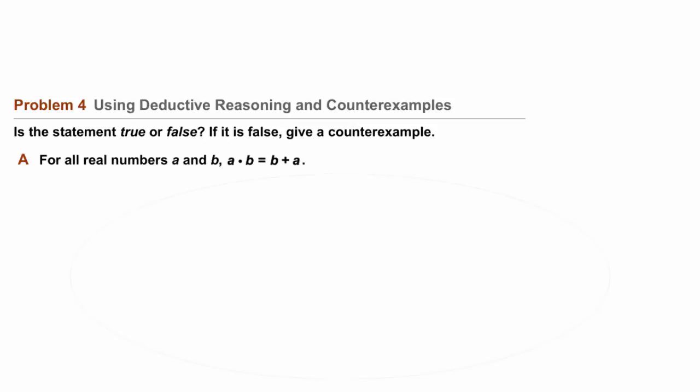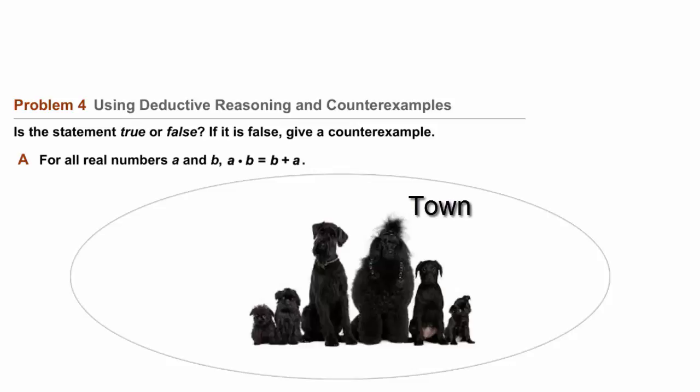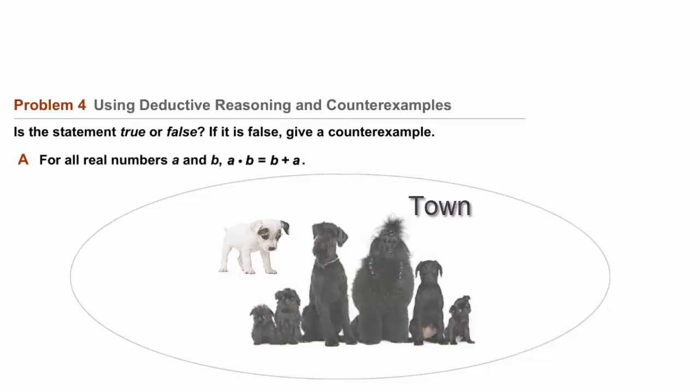If I make a statement like, all dogs in this town are black, well, we only need to provide one non-black dog, maybe a white dog, to demonstrate that that statement was false. So we'll do something similar with equations like this.